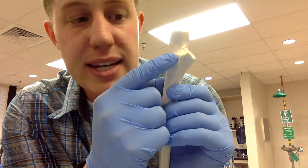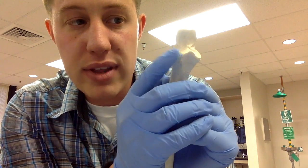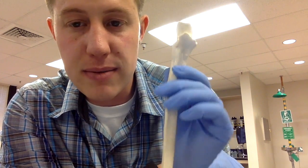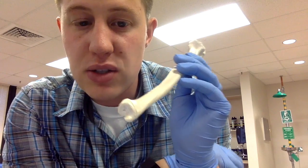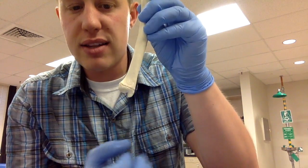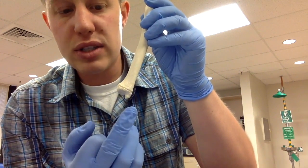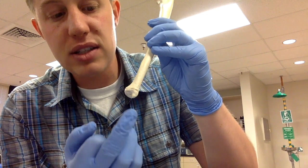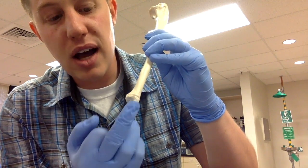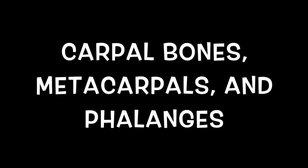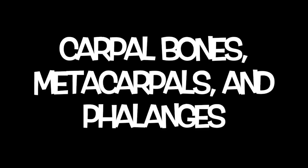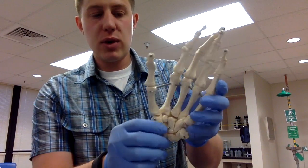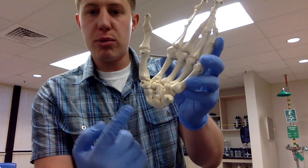There is also a small depression on the ulna called the radial notch, which allows the radius to articulate with the ulna at the proximal end. At the distal end, all you need to know is the small process coming out is the styloid process of the ulna.